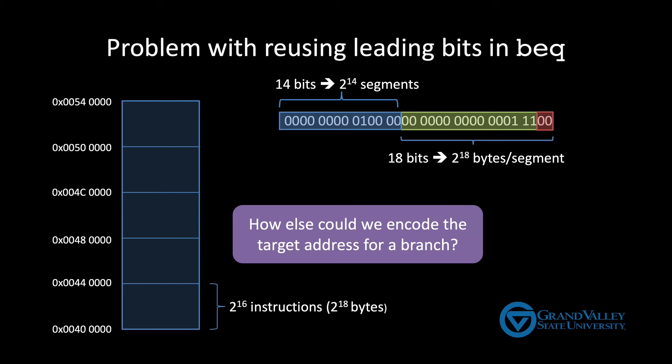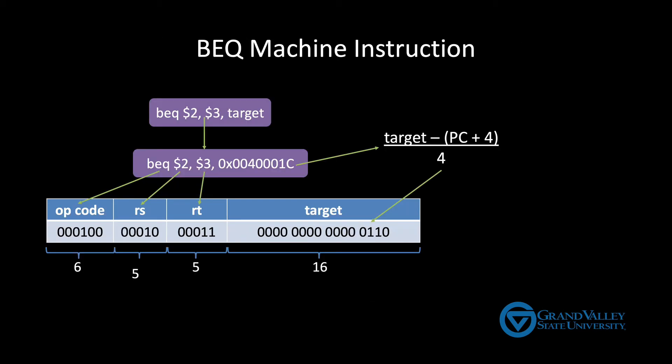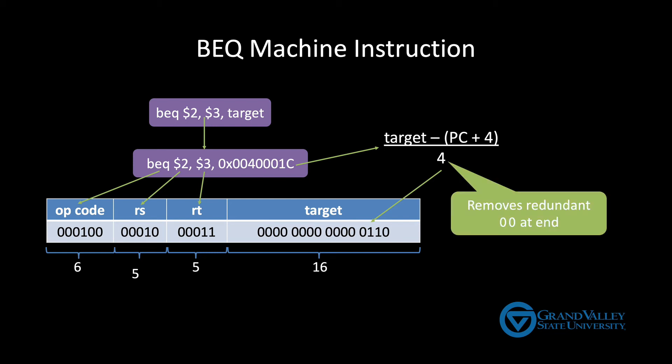So what MIPS does for branches is it sets up the machine instruction so it contains the opcode, the two registers, and the difference between the target address and the program counter divided by four. As with jumps, we divide by four because all instruction addresses are multiples of four and there's no need to encode the last two zeros. Also MIPS calculates the target address based on the new value of the program counter, that is PC plus four, instead of the current value because it simplifies the process of building a pipeline CPU later in the semester.